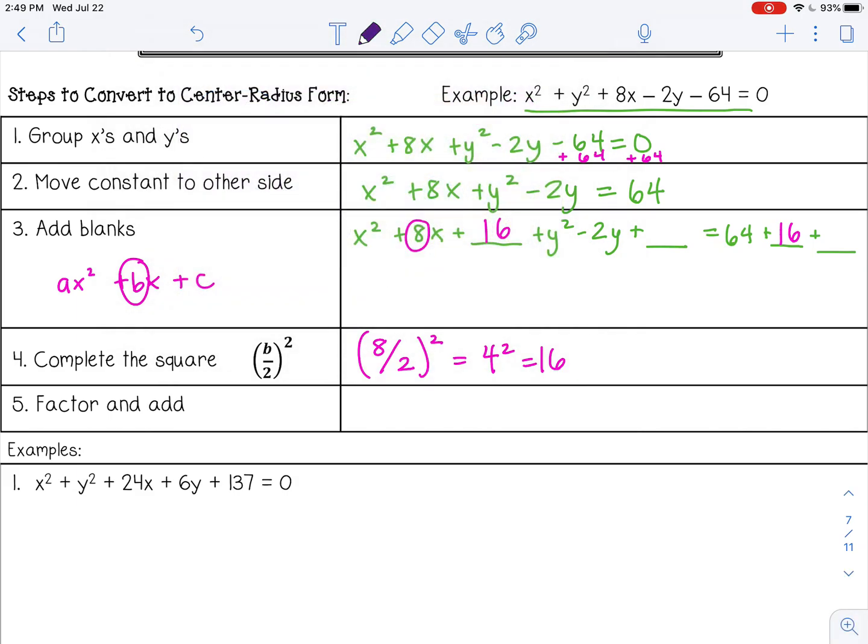Then I'm going to do the same thing with my y trinomial. It's like we have two trinomials here: my x trinomial and my y trinomial. Remember, trinomial just means three terms. So I'm going to take my b term, negative 2, half it and square it, which is negative 1 squared, which is 1. Notice I put plus blank every time because when you're squaring, it's always going to be positive. You'll never have a negative number in those blanks.